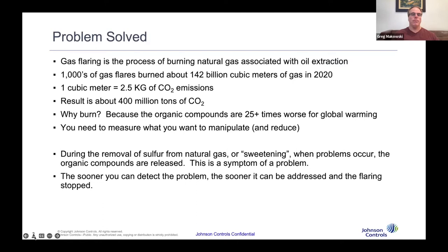These are the first four hydrocarbons: methane, ethane, propane, and butane. You can see in the 3D structure it's just chains of carbons and hydrogens, and the chains just get longer and longer. Most of the mass is going to be in the carbon, not the hydrogen, and we go from one carbon atom to four carbon atoms. That'll come into play with some of the physics properties.